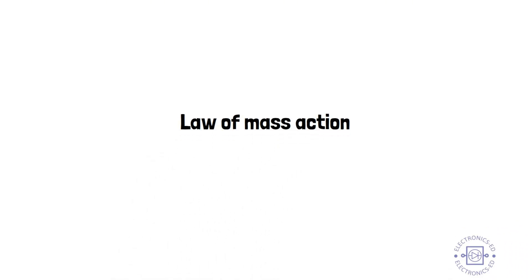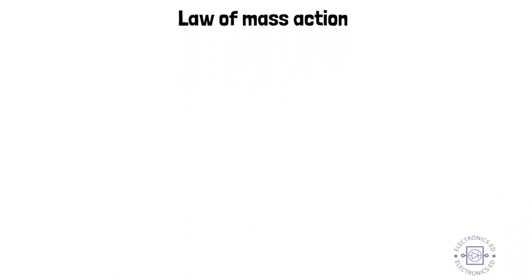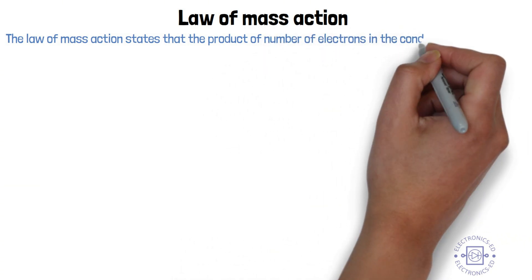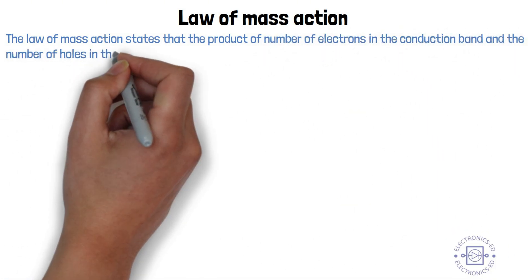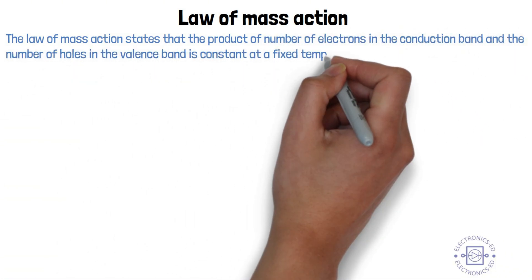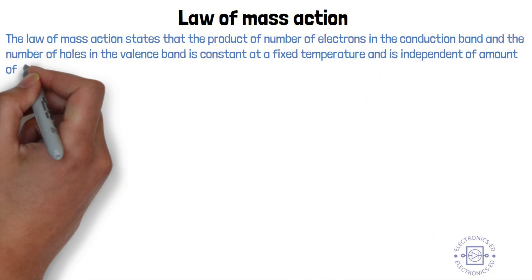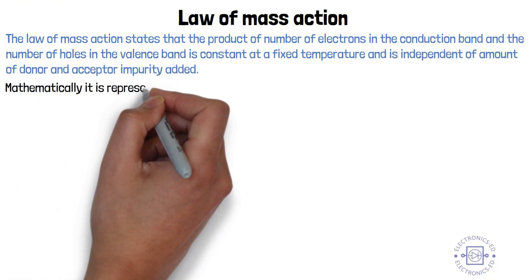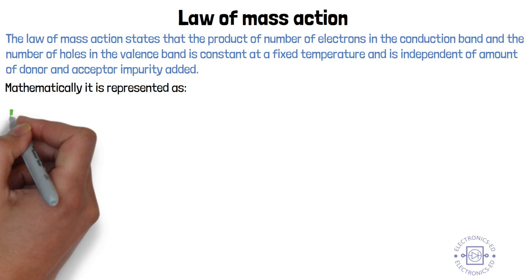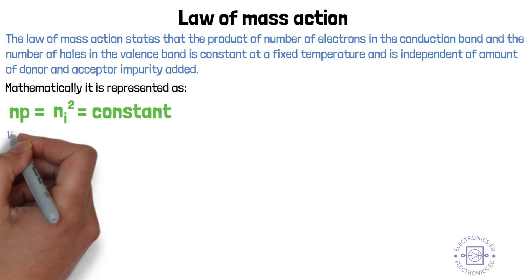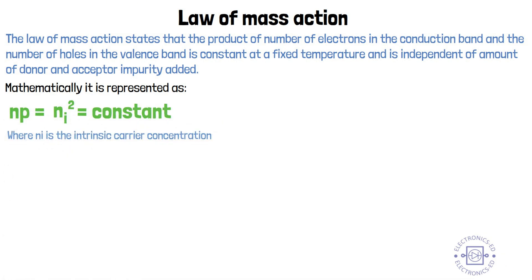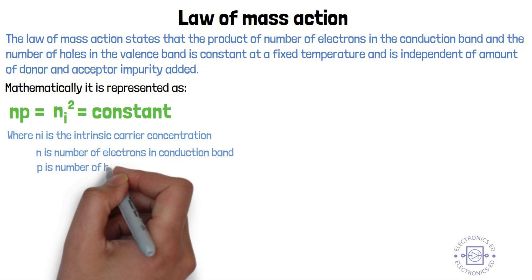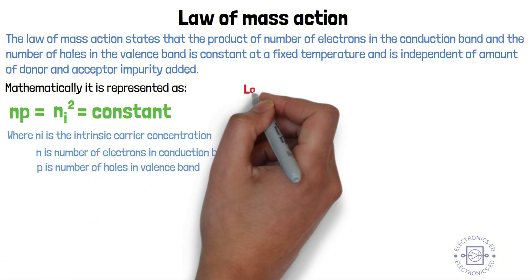Law of mass action. The law of mass action states that the product of number of electrons in the conduction band and the number of holes in the valence band is constant at a fixed temperature and is independent of amount of donor and acceptor impurity added. Mathematically it is represented as NP equals NI square equals constant, where NI is the intrinsic carrier concentration, N is number of electrons in conduction band, and P is number of holes in valence band.